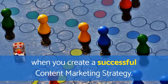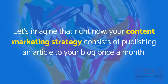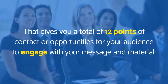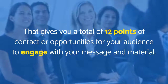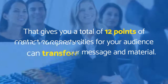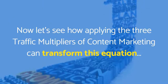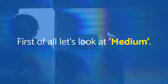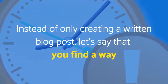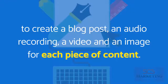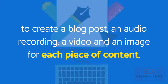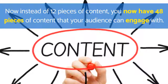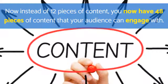When you create a successful content marketing strategy, let's imagine your current strategy consists of publishing an article to your blog once a month — that gives you 12 points of contact or opportunities for your audience to engage with your message. Now let's apply the first traffic multiplier: medium. Instead of only creating a written blog post, let's say you create a blog post, an audio recording, a video, and an image for each piece of content — now you have 48 pieces of content.